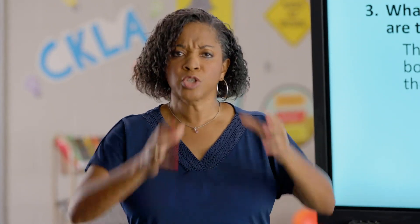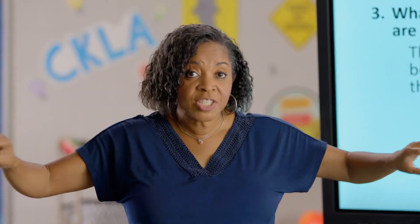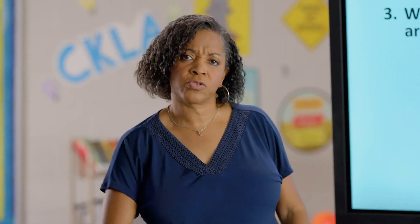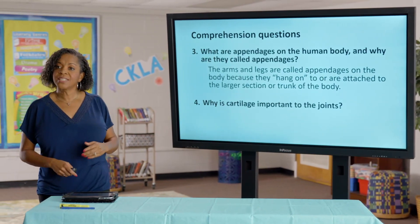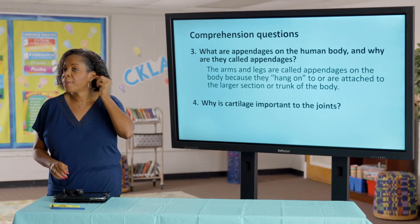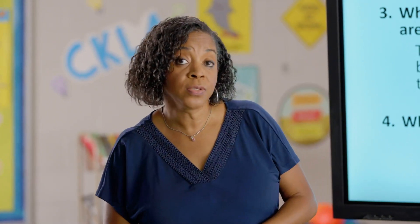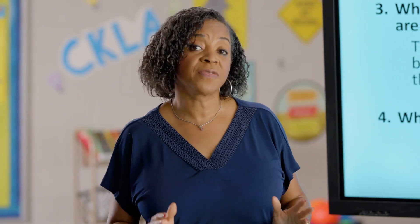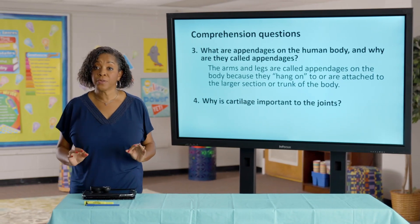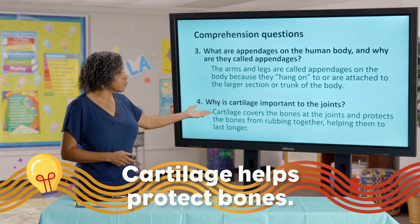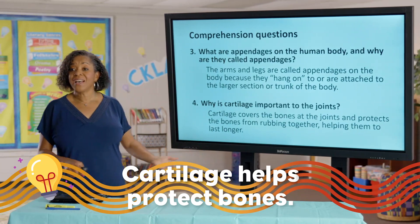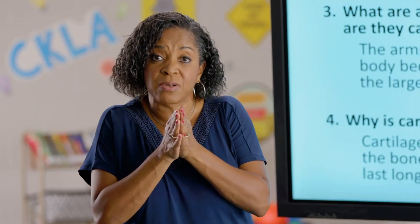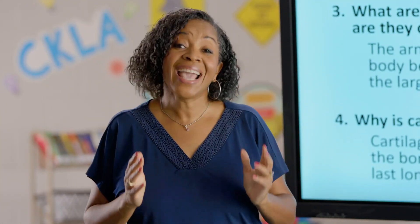Just like a tree — you've heard of the term tree trunk — then we have the branches or appendages that come from the tree trunk. Well, this is kind of like our trunk, so we've got appendages — our arms and our legs — which come from the main part. Good job. Why is cartilage important to the joints? Cartilage covers the bones at the joints and protects the bones from rubbing together, helping them to last longer. Because if there wasn't cartilage, the bones would rub and wear out much more quickly and they wouldn't be protected.